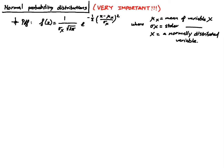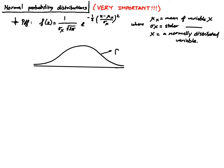Now we know that if we plot the PDF we get the probability density curve. This is a very complicated function to plot, but if you can plot it, it produces something that looks like this. So this is the probability density curve of a normal variable.